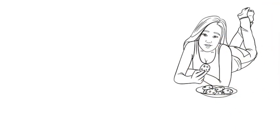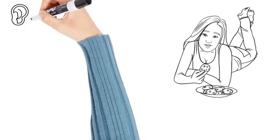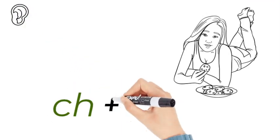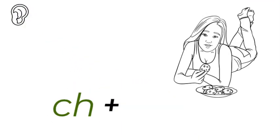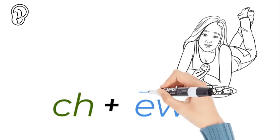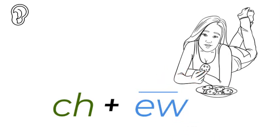Chew. We use our teeth to chew. What sounds do we hear? Chh, which is a C-H, followed by the oo. That is a long vowel sound — one of the five long vowel sounds: A-E-I-O, oo. And one of the ways of writing an oo is E-W, usually at the end of words.